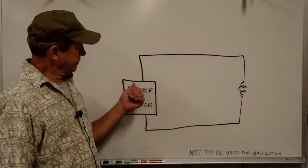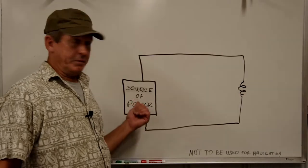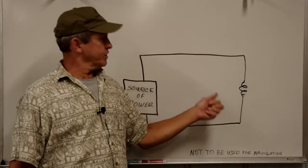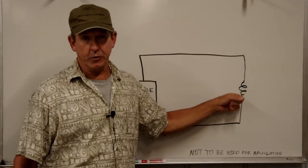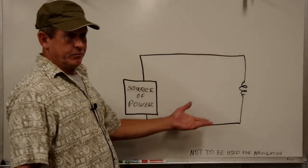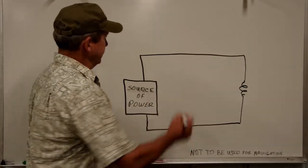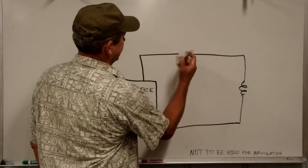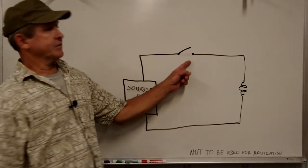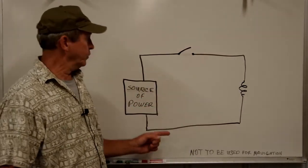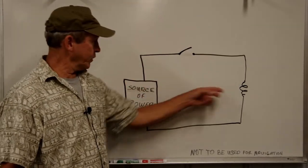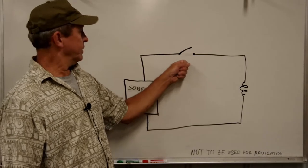Now we have electrons that are flowing, they light our light bulb and return back to source. We have our loop and we're getting energy to do some work for us on the way out. But we have no way to control it, and since I'm a control freak, I'm going to put a switch in here so that the electrons do the work I want them to do when I tell them to. Now we have a circuit that's doing work for us and we can control that circuit.